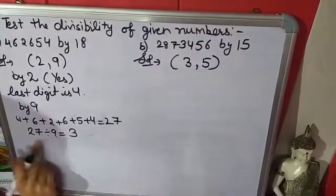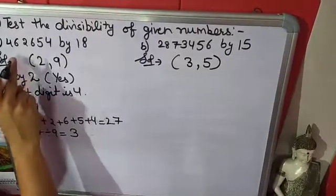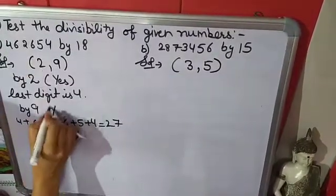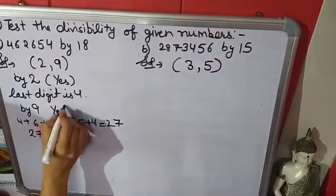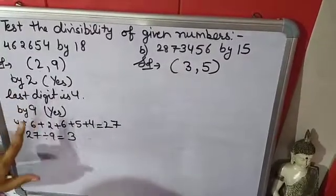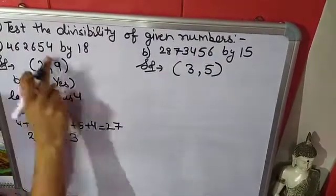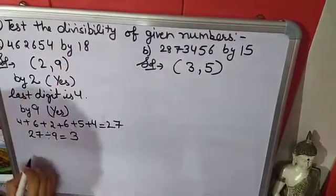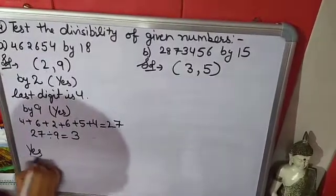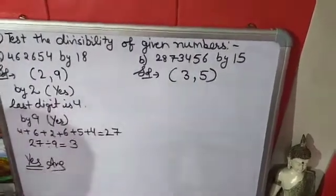9 threes are 27, so yes, it is divisible by 9 also. Since this number is divisible by both 2 and 9, it is divisible by 18 also. So the answer is yes.